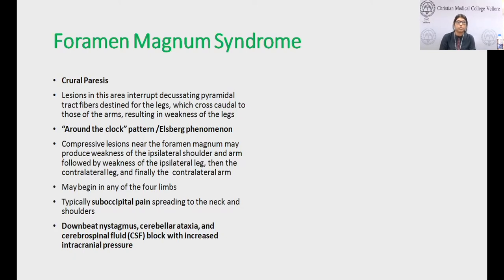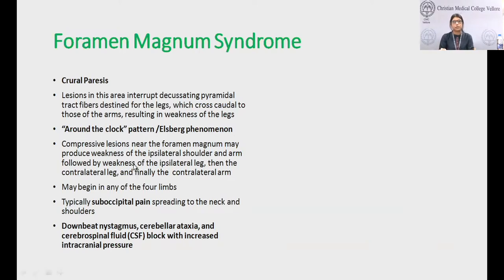The Ellsberg phenomenon describes how compressive lesions near the foramen magnum cause weakness in a U-pattern: ipsilateral shoulder first, then arm, then ipsilateral leg, then contralateral leg, then finally contralateral arm. In foramen magnum syndrome, pain is in the suboccipital region, and there can be downbeat nystagmus, cerebellar ataxia, and raised ICP from CSF block.